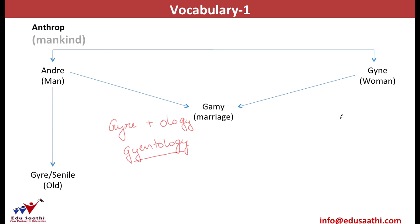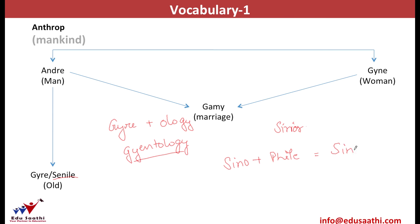We all know that senior citizens are the ones that cross the age of 65, and 'senior' comes from 'senile.' Can you make a word for someone who loves old people? Since he loves old people, the two roots would be 'seno,' that is senile, and 'phile,' that is love. So the concept of loving old people is senophile.